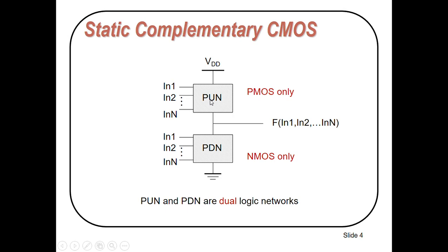PUN is the pull-up network and PDN is the pull-down network. These are the inputs and here is the output. VDD connects at the top and ground at the bottom. In the pull-up network we use only PMOS transistors, and in the pull-down network we use only NMOS transistors. The pull-up and pull-down networks are dual logic networks.